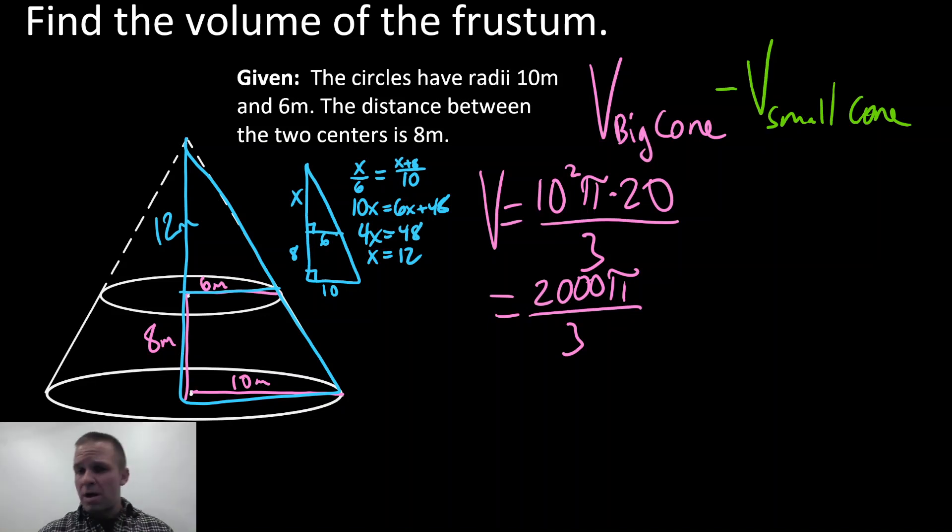Now I'm going to find the volume of my small cone, which I changed to a green color. So the volume of that small cone is going to be pi R squared, my area of my base is going to be 6 squared pi times my height, which is 12, divided by 3. Again, I'm going to leave this over 3 for now. So that's going to end up being 36 times 12, which gives me 432 pi divided by 3.